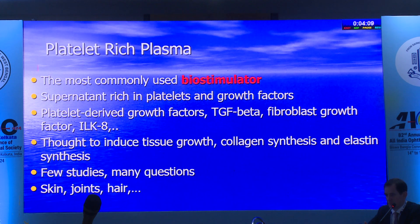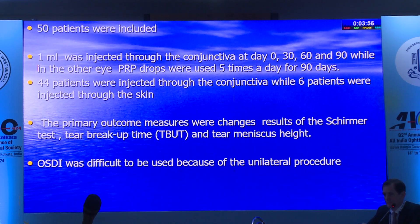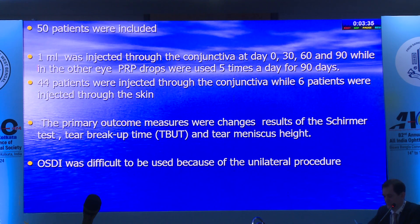PRP has been used as an eye drop for the ocular surface to promote corneal epithelium healing. We injected PRP directly into the lacrimal gland in patients with aqueous-deficient dry eyes—not meibomian gland dysfunction—confirmed by tear osmolarity, Schirmer, breakup time, and tear meniscus height showing reduced lacrimal gland secretion.